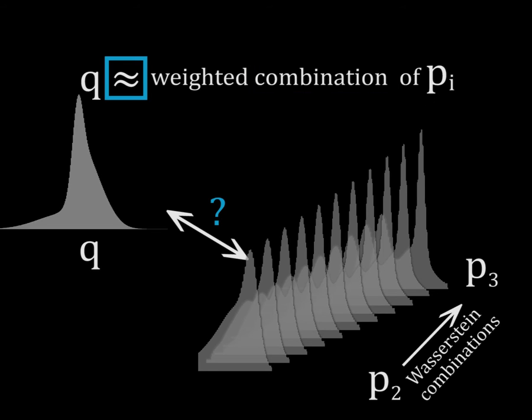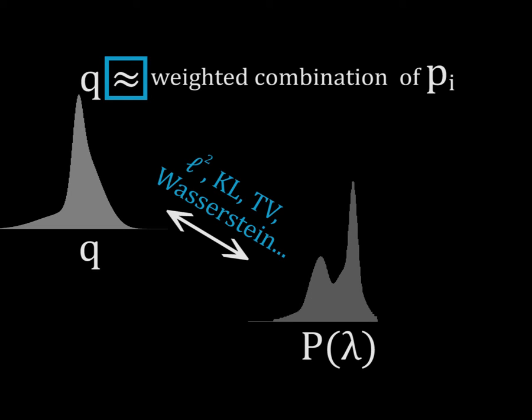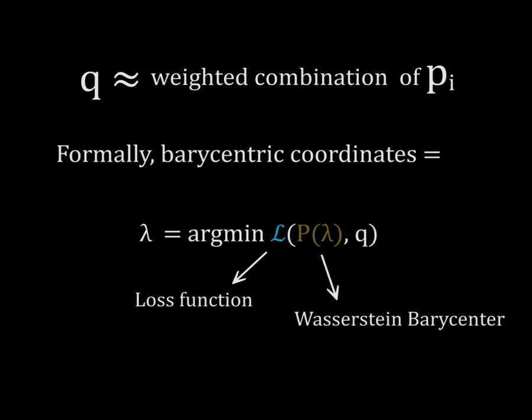Second, to measure the approximation error, this work allows the use of any loss function, such as quadratic, KL, total variation, or even Wasserstein losses. To summarize, we formally define barycentric coordinates as the weights minimizing the loss function between Wasserstein barycenters and the input histogram.